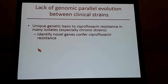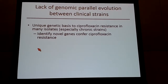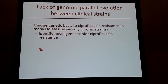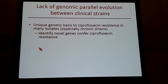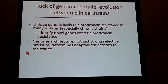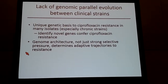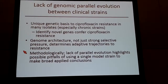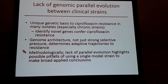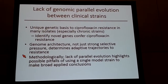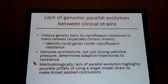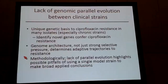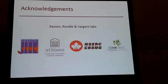Overall, we found a surprising lack of genomic parallel evolution between clinical strains. We found a unique genetic basis to ciprofloxacin resistance in many isolates, especially in strains from chronic infections, and future work will identify novel genes conferring ciprofloxacin resistance. We found that genome architecture — not just the strong selective pressure of growing in the presence of antibiotic — determines adaptive trajectories to resistance. Methodologically, this lack of parallel evolution highlights the pitfall of using a single model strain to draw broad applied conclusions. Using only PA14, we would conclude resistance always involves a handful of genes — but across multiple genetic backgrounds, there are really broad evolutionary trajectories to ciprofloxacin resistance.